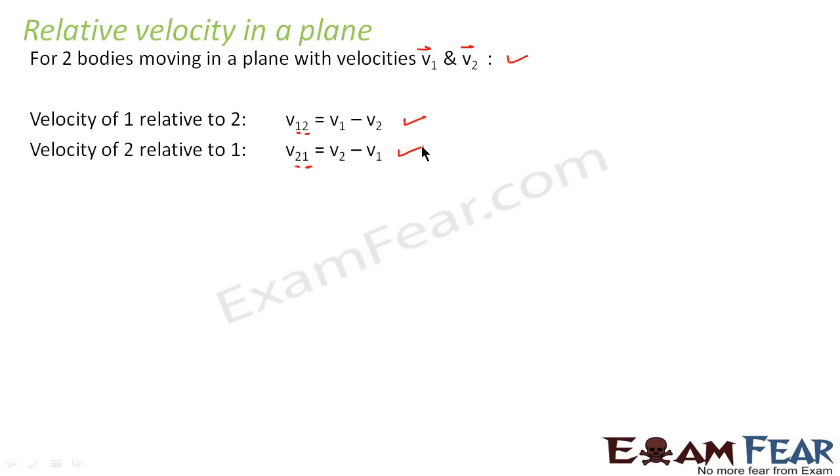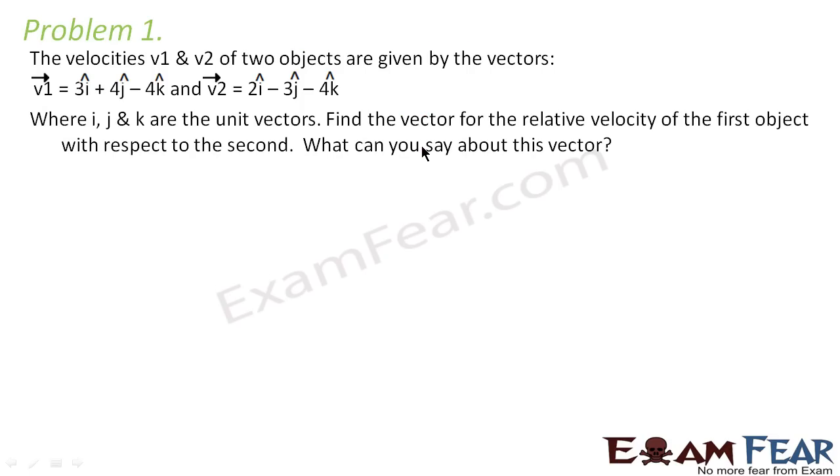So now we will look at two problems and then proceed further with projectile motion. Here comes problem 1: The velocities v1 and v2 of two objects are given by the vectors v1 equals 3i plus 4j minus 4k and v2 equals 2i minus 3j minus 4k, where i, j and k are the unit vectors. Find the vector for the relative velocity of the first object with respect to the second. What can you say about this vector?